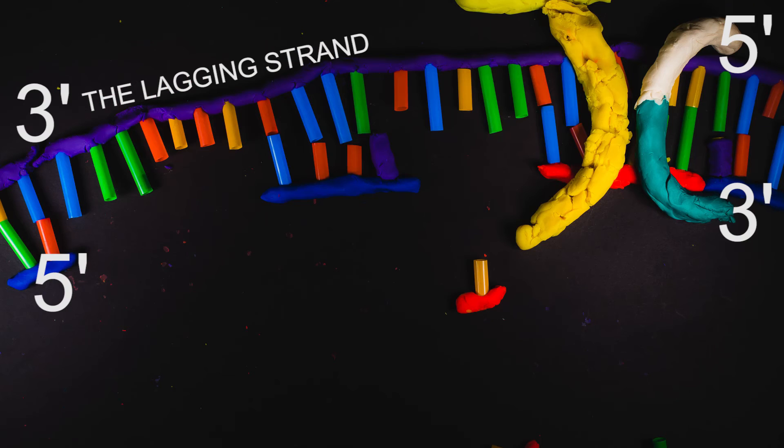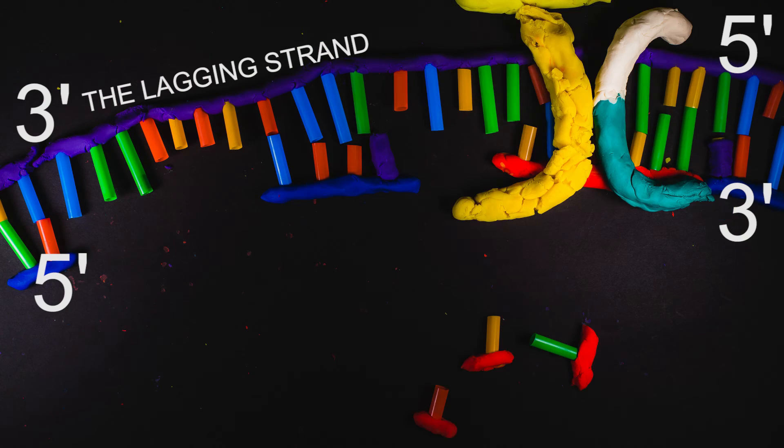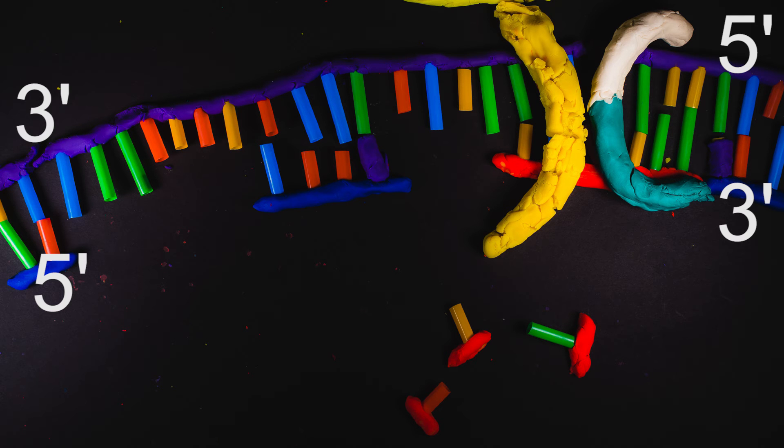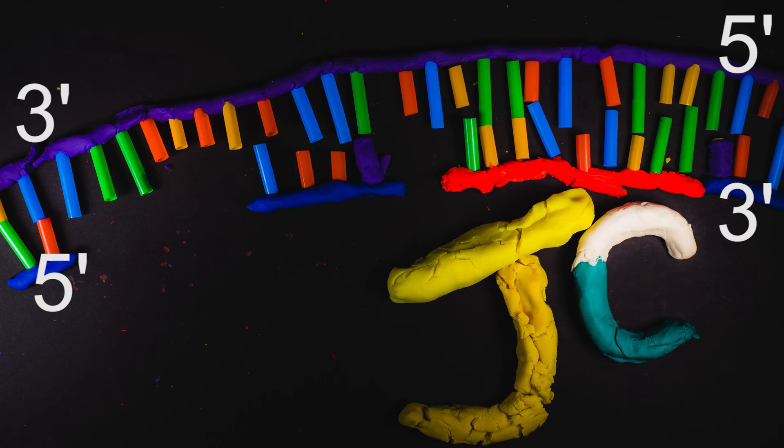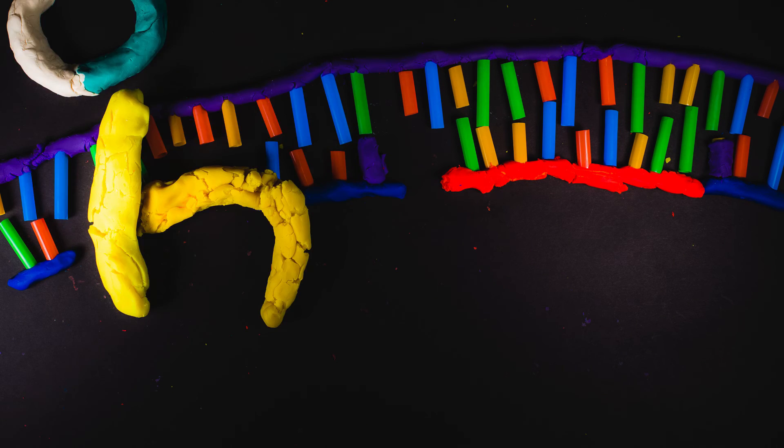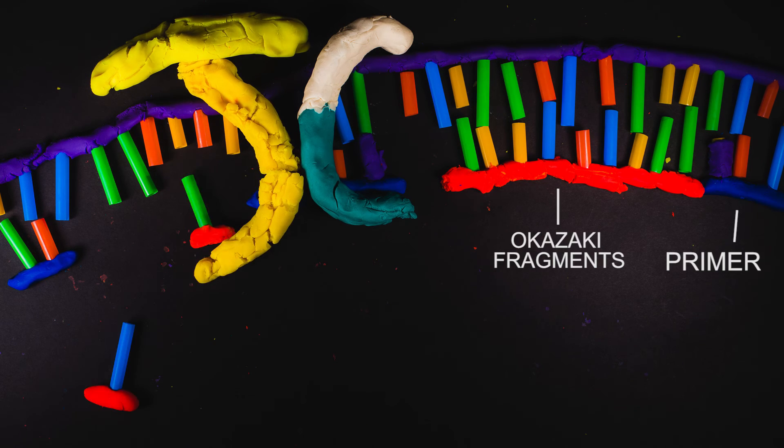The lagging strand, however, is in the opposite orientation. This means that POL3 must create a new strand by moving in the opposite direction of the replication fork. It accomplishes this by creating many small fragments of the daughter strand, called Okazaki fragments.